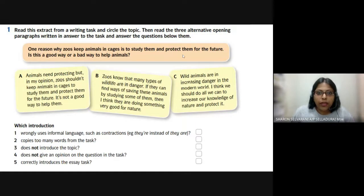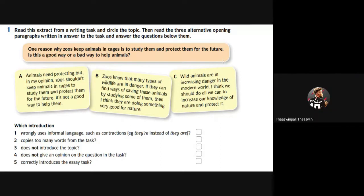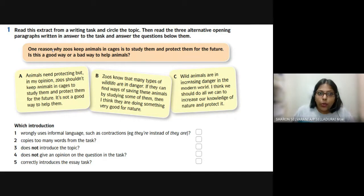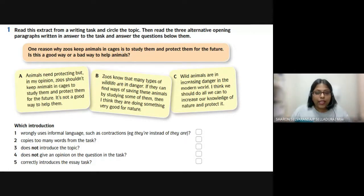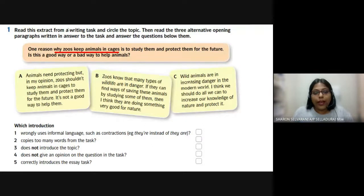What do you think is the main point or topic here? Don't look down, just look at this box: 'One reason why zoos keep animals in cages is to study them and protect them for the future. Is this a good way or a bad way to help animals?' So we are going to talk about animals in zoos, but where exactly? In cages. So the topic is: zoos keep animals in cages — to study them and protect them for the future.